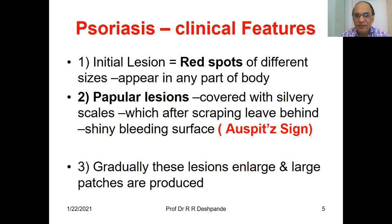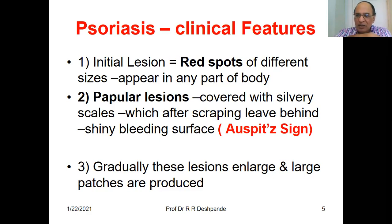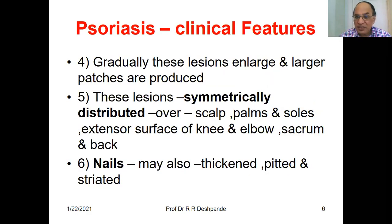Let us see the clinical features. The initial lesion is a raised spot of different sizes appearing in different parts of the body. It is a papular lesion covered with silvery scales. When you scratch, the scales are removed and leave behind a shiny bleeding surface. This is called the Auspitz sign. Gradually these lesions enlarge and large patches are created. The lesions are usually symmetrical — on both palms, both soles, extensor surfaces of the knees and elbows, and the sacrum and back.